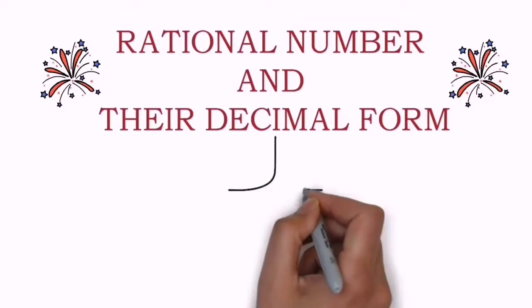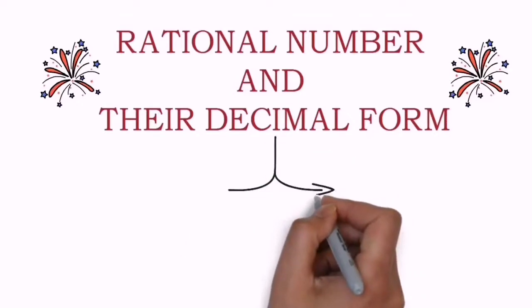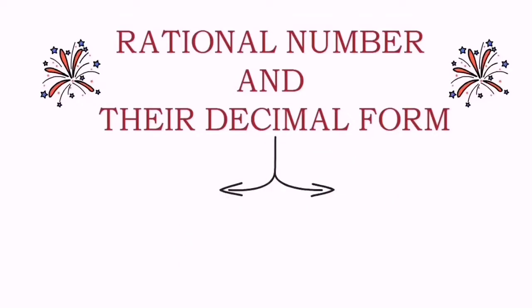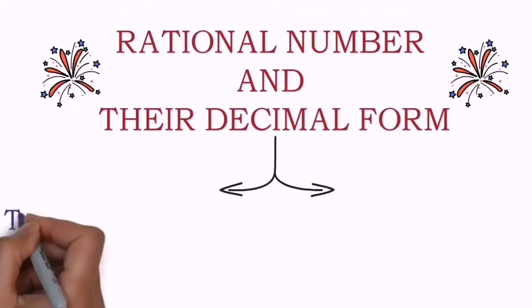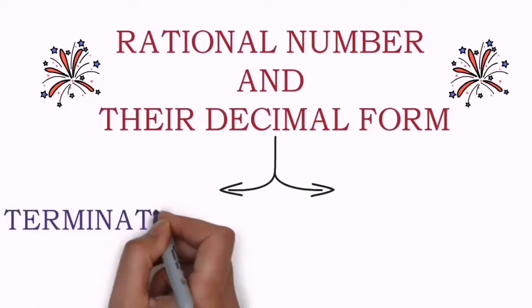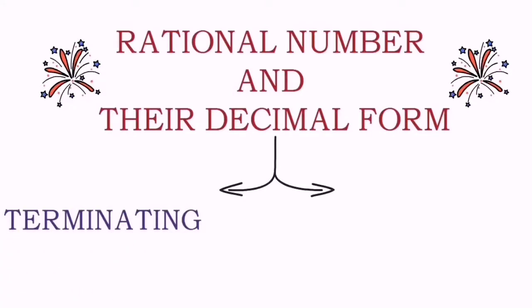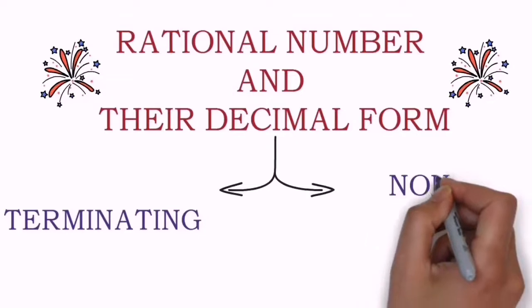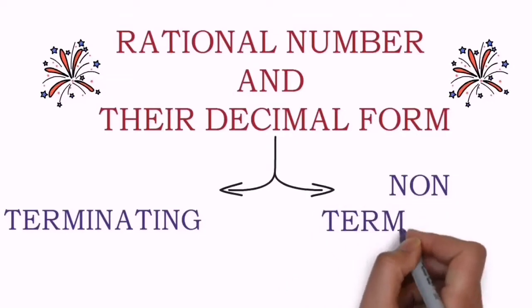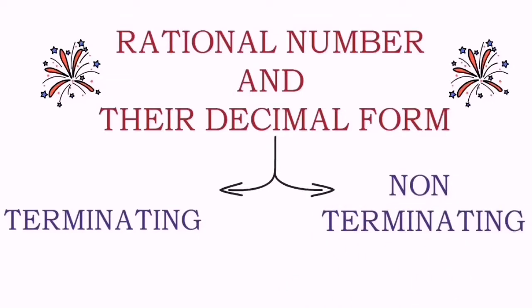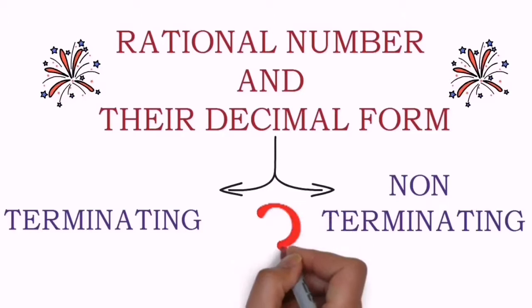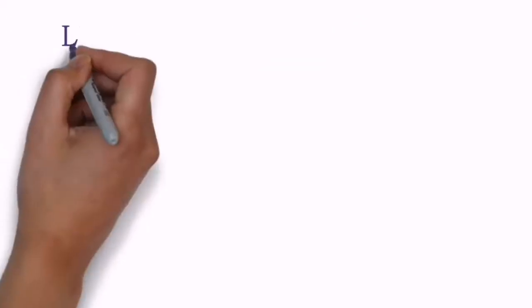The decimal form of a rational number can be categorized into two parts. The very first part is when the decimal form is terminating — meaning your answer is ending. The second is when the decimal form is non-terminating — meaning your answer is never ending. Yes, it can happen.